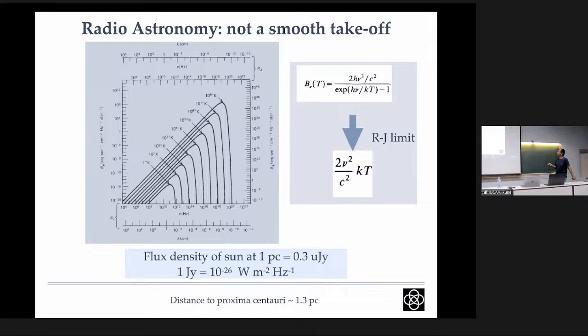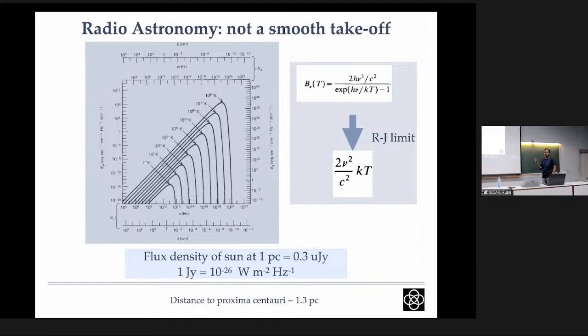If we put our Sun at one parsec, it would give a radio flux density of about 0.3 micro-Jansky. One Jansky is 10^-26 watts per meter squared per hertz — a very small quantity. Even with the most sensitive telescopes today, detecting 0.3 micro-Jansky would take many tens of hours. The nearest star is approximately one parsec away, so arguing purely from a blackbody perspective, it seems nearly impossible to detect stars at radio wavelengths if they're only thermal emitters.